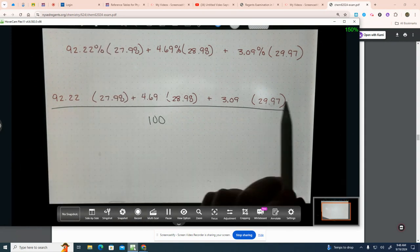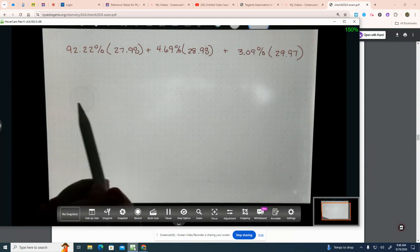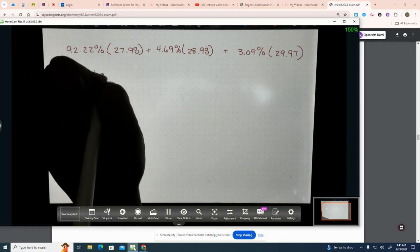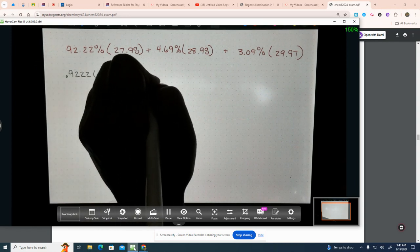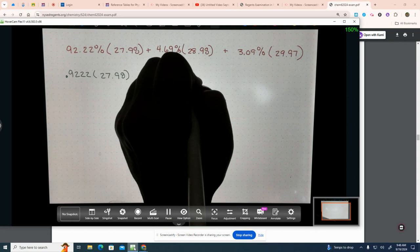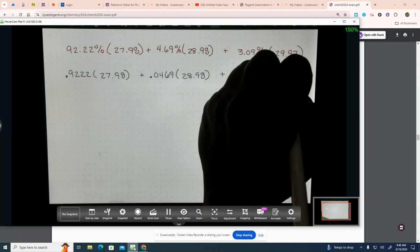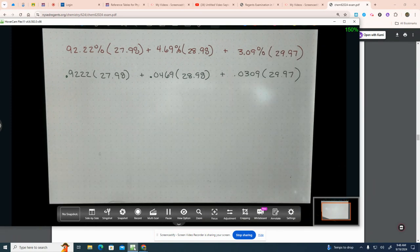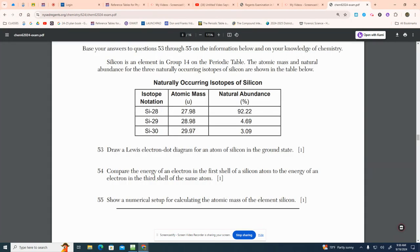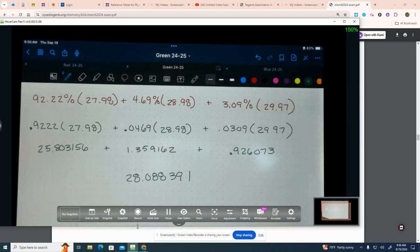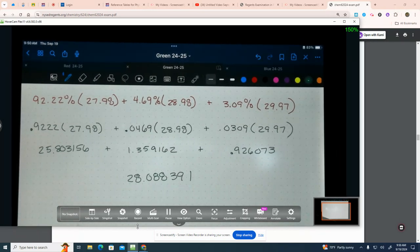And the reason I tell you this is because sometimes these questions are given to you as multiple choice, and they'll give you a bunch of choices. Watch that. Watch that they change the percent to a decimal. All right. Now let's go back and just do this problem. So we're going to take 0.9222 times 27.98 plus 0.0469 times 28.98 plus 0.0309 times 29.97. Plug that into your calculator, and let's see what we come up with. Does that look right? Yes. Yay. I didn't plug it into my calculator wrong.